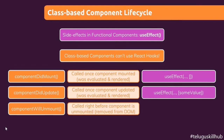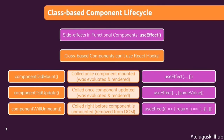The third method is componentWillUnmount. This is used right before unmounting the component — that is, removing it from the DOM, which is the Document Object Model. We use the DOM in the browser, and this method triggers when we are about to remove any kind of data or methods from our component.